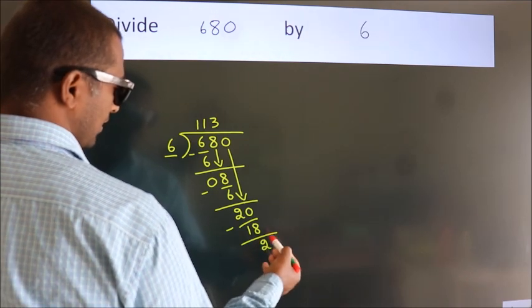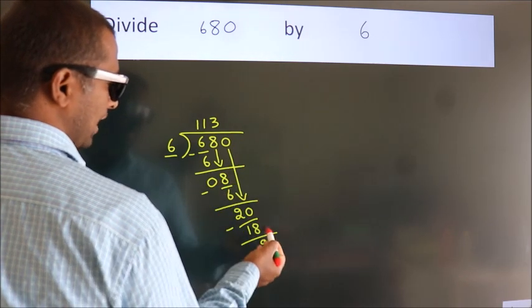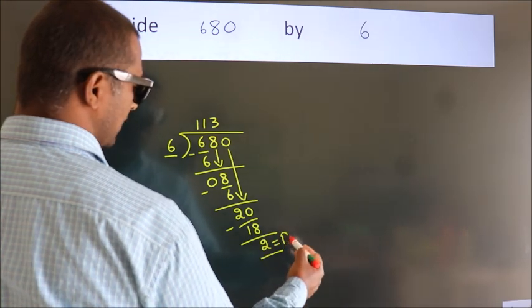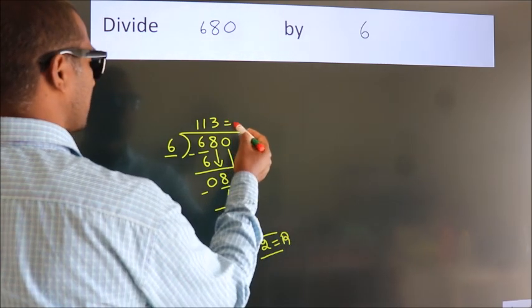After this, no more numbers to bring it down. So, we stop here. This is our remainder. This is our quotient.